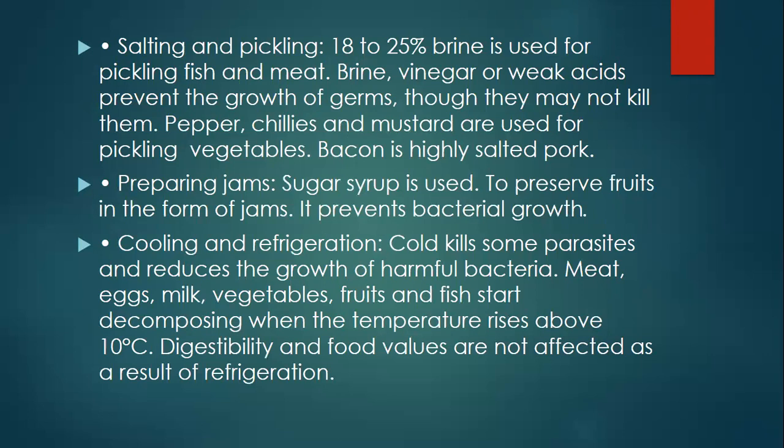Salting and pickling: From 18 to 25% brine is used for pickling fish and meat. Brine, vinegar, or weak acids prevent the growth of microorganisms, though they may not kill them. Pepper, cheese, and mustard are used for pickling vegetables. Bacon is highly salted pork.